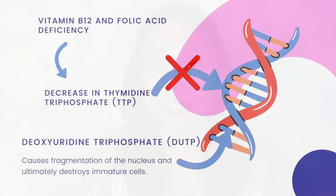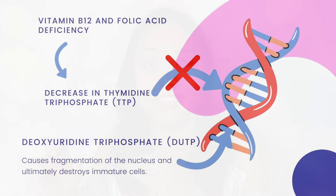If you don't have folic acid in your body, you compromise the synthesis of thymidine triphosphate (TTP), which is needed for DNA synthesis. Instead of TTP, deoxyuridine triphosphate (dUTP) attaches to your DNA, resulting in defective DNA. This leads to nuclear fragmentation, and ultimately immature cells die in the marrow and never reach the peripheral blood.